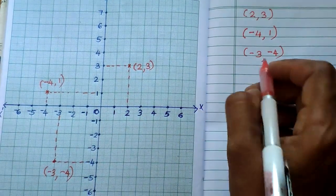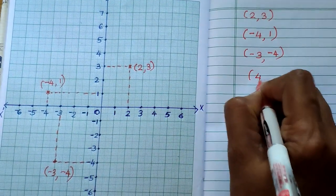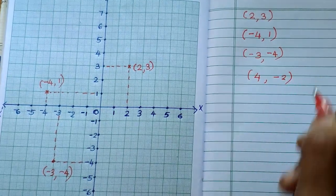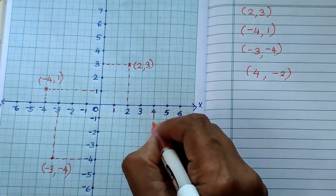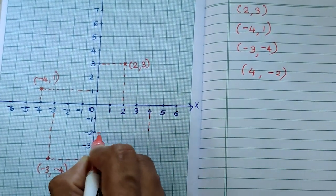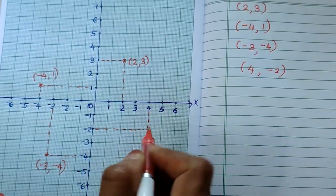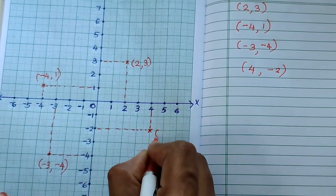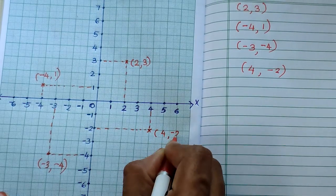Next, (4, -2). On the x-axis take 4, and on the y-axis take -2. The meeting point is (4, -2), which lies in the fourth quadrant.